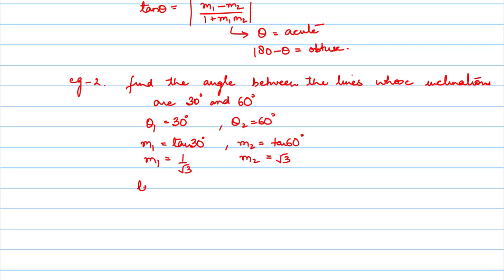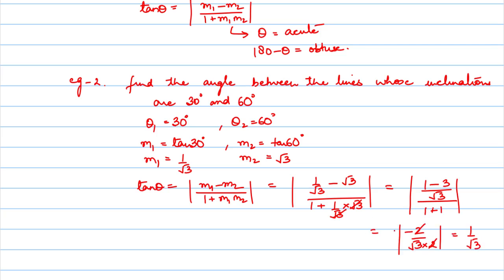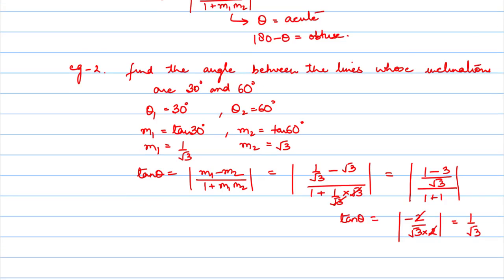Now we know m1 and m2. The formula for finding the angle between two lines is mod of m1 minus m2 upon 1 plus m1 times m2. Putting in the values: m1 is 1 upon root 3 minus root 3, and m2 is root 3, upon 1 plus (1 by root 3) times root 3. Taking LCM we get 1 minus 3 upon root 3, over root 3 plus root 3 cancels and we get 1 plus 1. This gives minus 2 upon root 3 times 2. The mod gives positive value 1 upon root 3. Therefore tan(theta) equals 1 upon root 3, so theta equals 30 degrees. The angle between the two lines is 30 degrees.